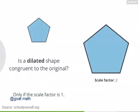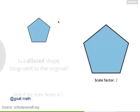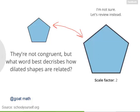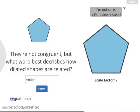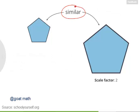A dilation will only preserve congruence if the scale factor is 1, meaning you're not actually changing the size of the shape. So while these two shapes are not congruent, there is a better word to describe how they're related. Dilated shapes are always similar to each other, and that means that while they have different sizes, other features of these shapes, like their corresponding angles, will be congruent.